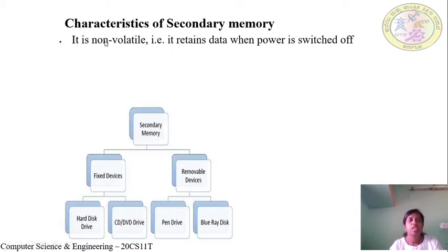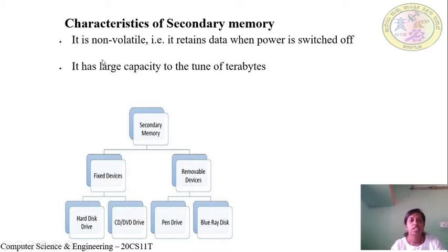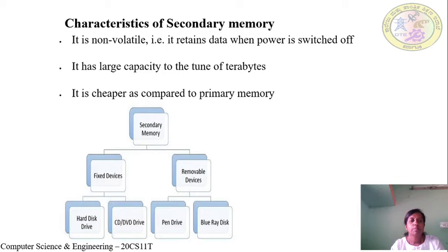We will now see the characteristics of secondary memory. First, it is non-volatile — it retains data when power is switched off. Second, it has a large capacity, up to terabytes of data. Third, it is cheaper compared to primary memory.